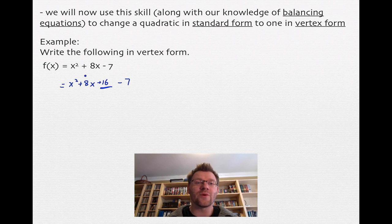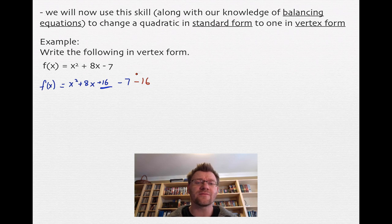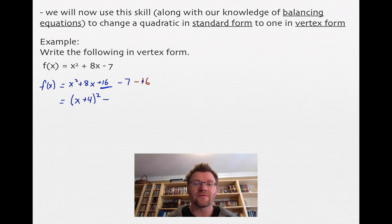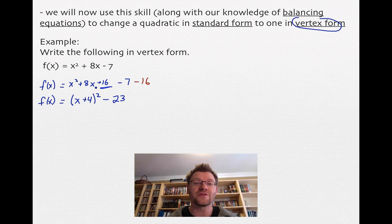Here's where balancing the equation matters. If I've added 16, I've changed the equation, so it's no longer equal to f of x. To balance it, I subtract 16 at the same time — adding 16 and subtracting 16 is like adding 0. Now I have x squared plus 8x plus 16, which factors to x plus 4 squared, minus 7 minus 16, which is negative 23. This quadratic is now in vertex form.